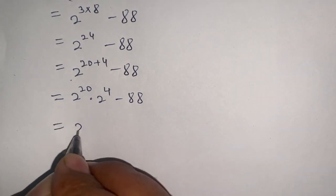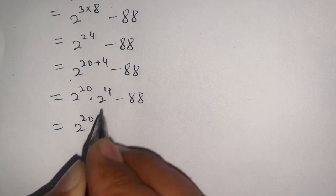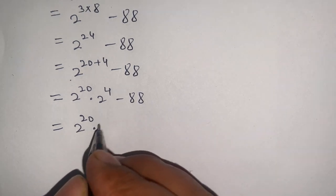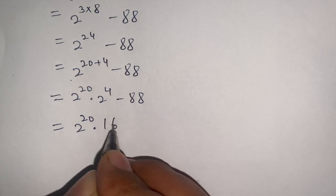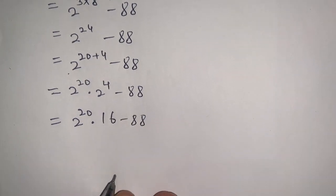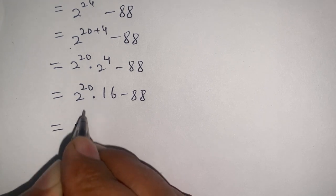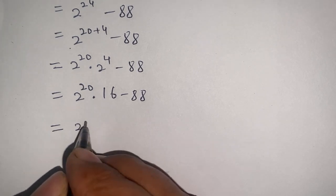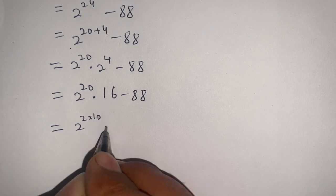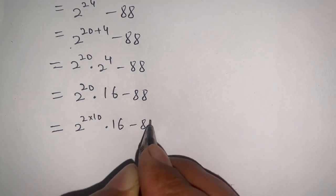This gives out 2 power 20 times 2 power 4. Since 2 power 4 equals 16, we get 2 power 20 times 16 minus 88. Now, 20 can be written as 2 times 10, so it becomes 2 power (2 times 10) times 16 minus 88.